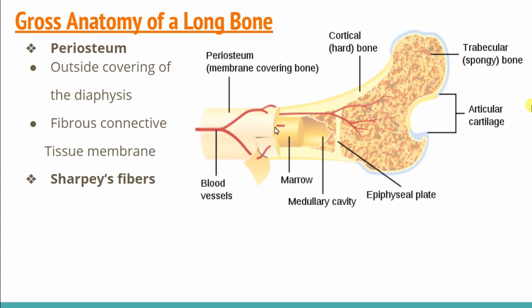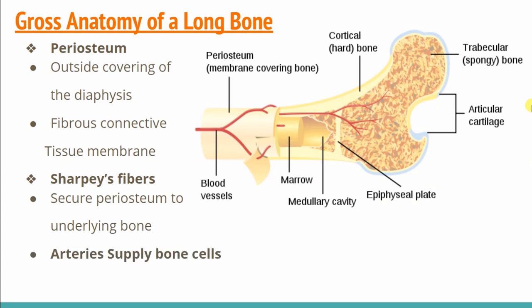You can see it here — this is a periosteum membrane. This is a fibrous connective tissue, which is what we call Sharpey's fibrous. We combine it with the periosteum membrane, and you can see blood vessels here, which will supply the bone.